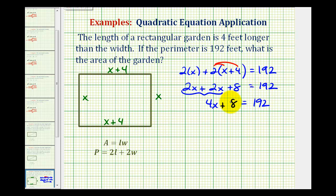Now we have a basic two-step equation. We'll start by undoing this plus eight. We'll subtract eight on both sides. So we'll have 4x equals 192 minus 8 is equal to 184. Divide both sides by four. We have x equals 46, or in this case, 46 feet.